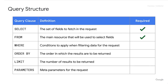If we just run through that left-hand column, you'll get a pretty good idea of what this syntax looks like. You select fields from a resource where certain filtering conditions apply. You can order results, limit your results, and there's also this parameters clause — it's not that often used.